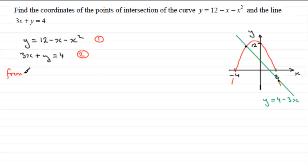So I'll just say from 2, we can see that y would be equal to 4 minus 3x. And what I'm going to do is call this equation 3. And I'm going to substitute that equation 3 into equation 1. And if we do that, then what we're going to have in place of y is now 4 minus 3x. So we therefore got 4 minus 3x equals 12 minus x minus x squared.